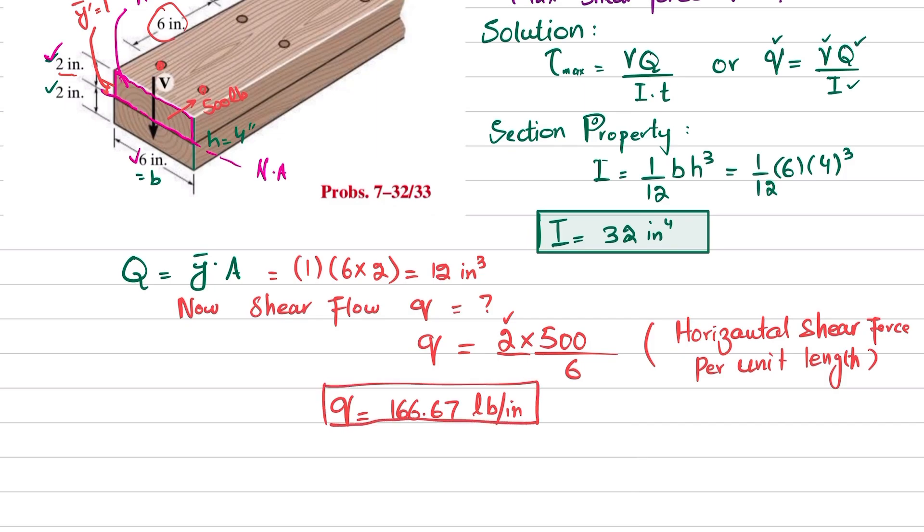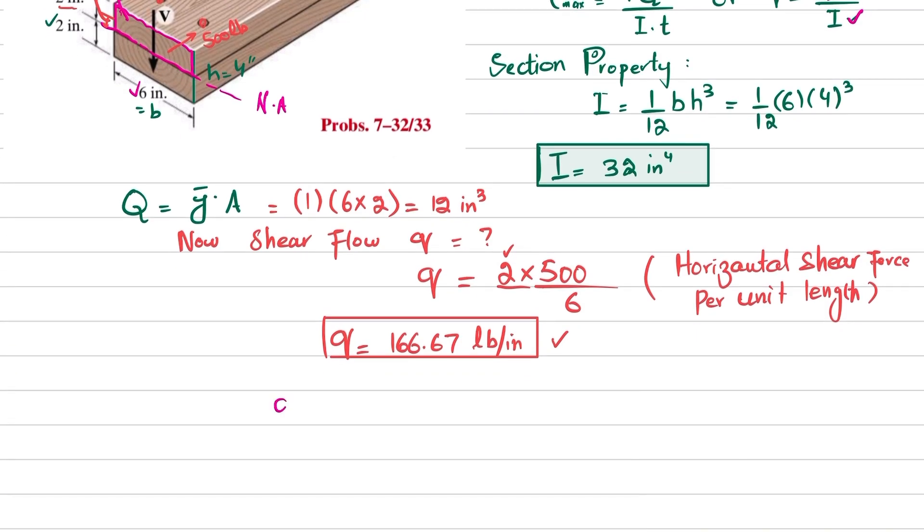The shear flow between the nails is 166.67 pounds per inch. Now we know the shear flow, we know q, we know I, so we will use this formula to find V. Q is equal to V times Q divided by I.